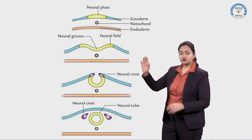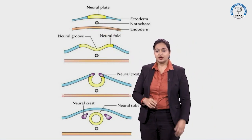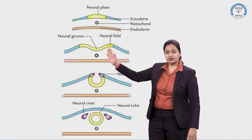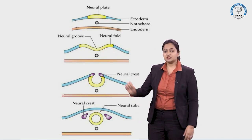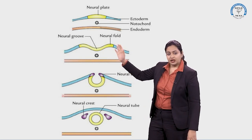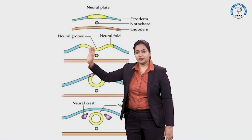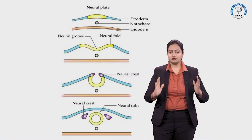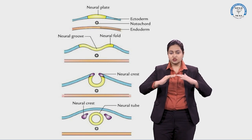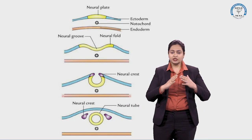The neural plate is visible here, and after its formation, a depression appears in the neural plate — this depression is termed the neural groove. As this depression occurs, folds appear on the sides, termed neural folds. These neural folds approximate each other and fuse to form the neural tube.